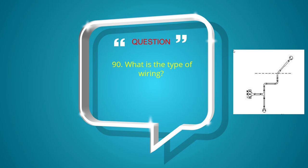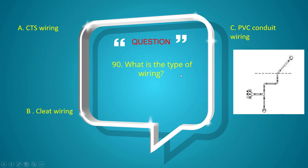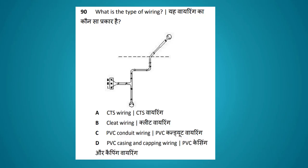What is the type of wiring shown? Options: CTS wiring, cleat wiring, PVC conduit wiring, PVC casing and capping wiring. The answer is cleat wiring.